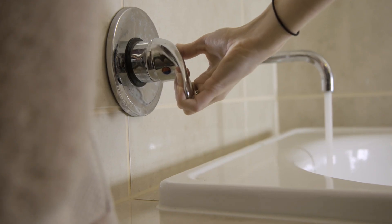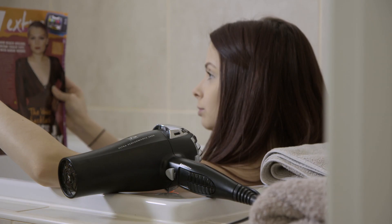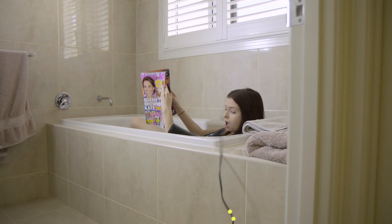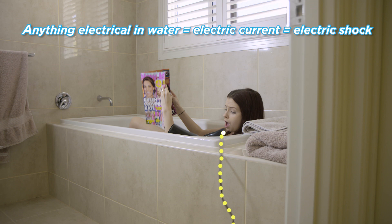When you have a bath, there should be nothing electrical anywhere near you. This means if a household appliance like this hairdryer fell into the bath, whoever was in it would also become a conductor of electricity and receive a severe electric shock.